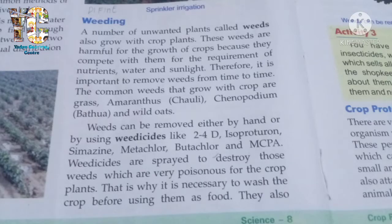The next topic is weeding. As the name suggests, weed means unwanted plants. So when we grow crops, a huge number of unwanted plants also grow, and we call them weeds. These weeds are harmful for the growth of crops because they compete with the crop plants for nutrients, water, sunlight, and oxygen.